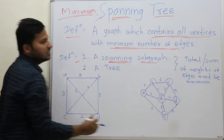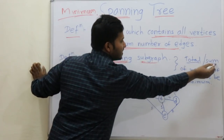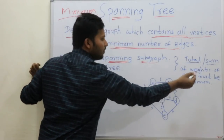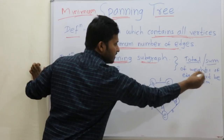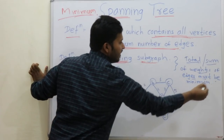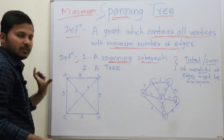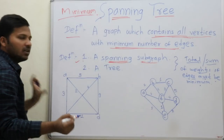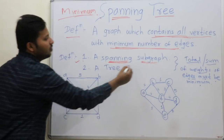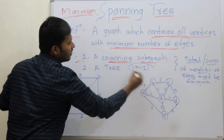The condition is that the total sum of the weights of edges must be minimum. Here we are clear that how many edges should be there — n-1.